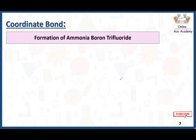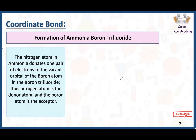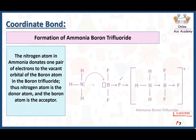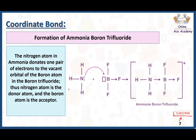The first example is the formation of ammonia–boron trifluoride. The nitrogen atom in ammonia donates one pair of electrons to the vacant orbital of the boron atom in boron trifluoride. Thus, the nitrogen atom is the donor atom and the boron atom is the acceptor, and this is how a coordinate bond is formed.